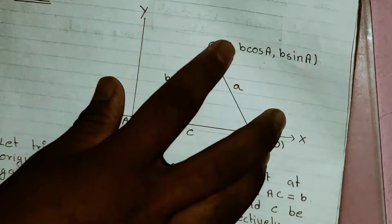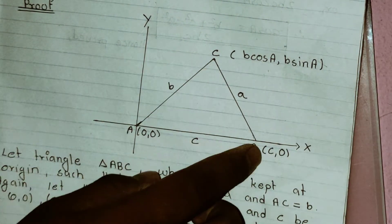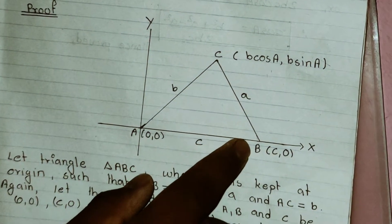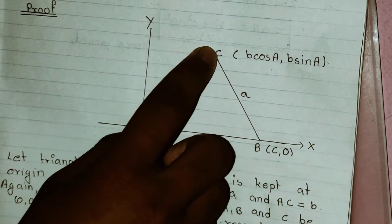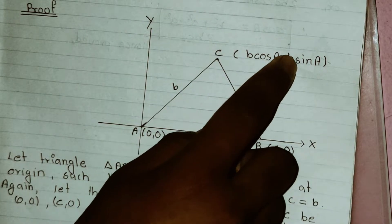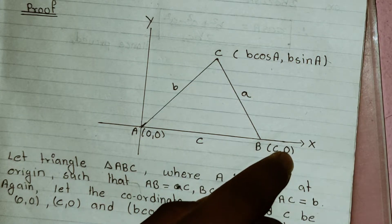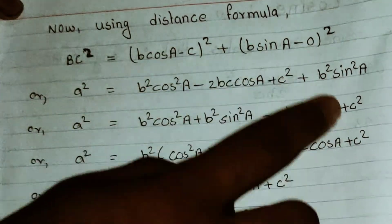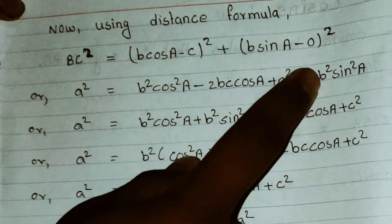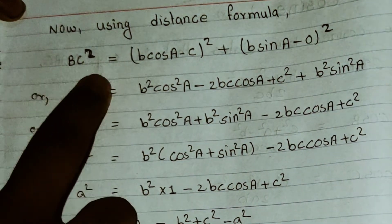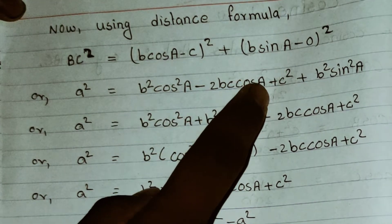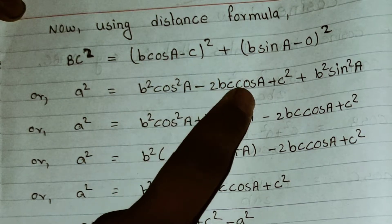We are using the distance formula for BC. BC equals the square root of (b cos A minus c) squared plus (b sin A minus 0) squared.